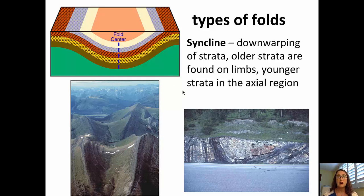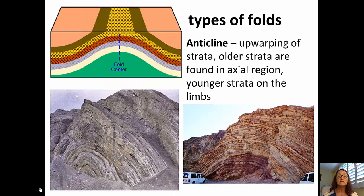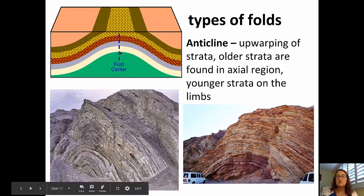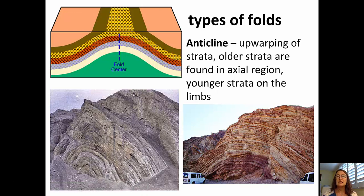You can see examples of synclines in the two pictures here. The next type of fold is an anticline — an up-warping of strata. If strata are compressed, they might bulge upward. The age pattern is opposite that of a syncline: the axial region in the center of the anticline exposes older rock by erosion, and walking toward the limbs in either direction, one would walk into progressively younger strata.